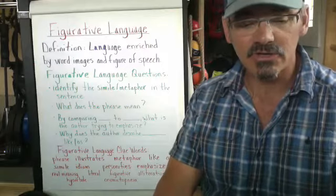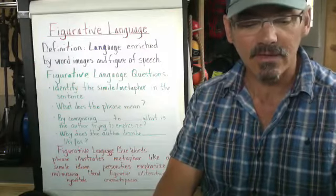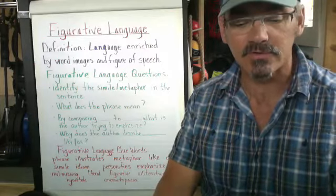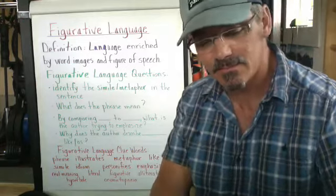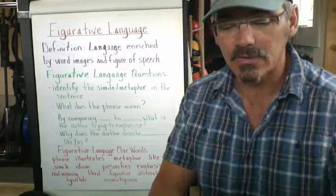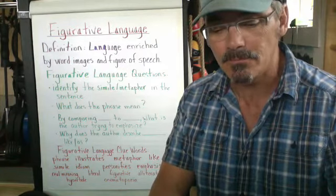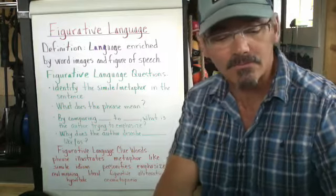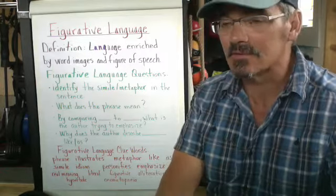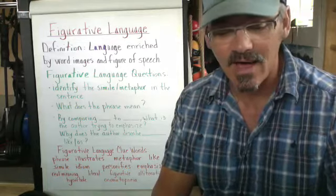Personification is the next one. Giving or attributing a human characteristic action or quality to a non-living thing. And an example is the red purse slumped in exhaustion when she finally set it on the table. And so sounds like the red purse is alive.